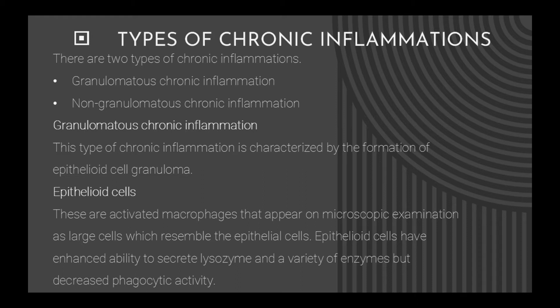Granulomatous chronic inflammation is characterized by the formation of epithelioid cell granuloma. Epithelioid cells are activated macrophages that appear on microscopic examination as large cells which resemble epithelial cells. Epithelioid cells have enhanced ability to secrete lysozyme and a variety of enzymes, but decreased phagocytic activity.